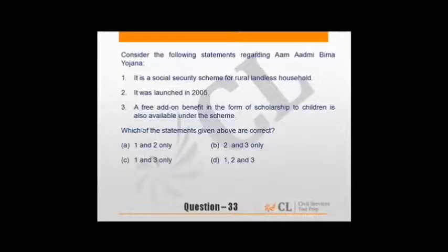Statements regarding Aam Aadmi Bima Yojana. Considering the scheme, it is a social security scheme for rural landless households - that is correct. It was launched in 2005 - no, launched in 2007. Such questions are very difficult because it's difficult to remember launching year of all schemes. But just by-heart it, you cannot do anything else. Generally expect one or two questions of such type in whole paper. Do not read very much about this because there will never be more than one or two questions. A free add-on benefit in form of scholarship to children is also available - correct. So third option, C stands correct.